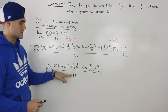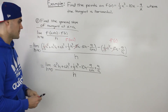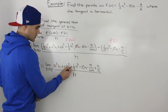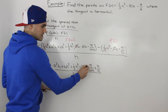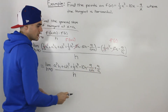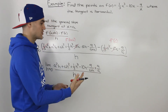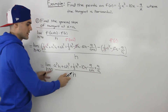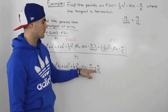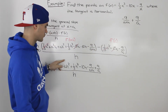The goal is still to get rid of the h in the denominator so we can plug in 0 for h to get the general slope formula. Most terms have an h, but the fraction terms don't have an h in the numerator. If we combine those two fraction terms — minus 9 over (a+h) plus 9 over a — into a single fraction, maybe we'll get an h in the numerator, and then we can factor out h from everything.